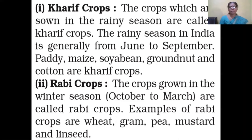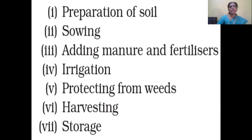Rabi crops are the crops grown in winter season, that is from October to March. Examples of Rabi crops are wheat, gram, pea, mustard, and linseed. Agricultural activities involve several practices, and farmers undergo these stage by stage.